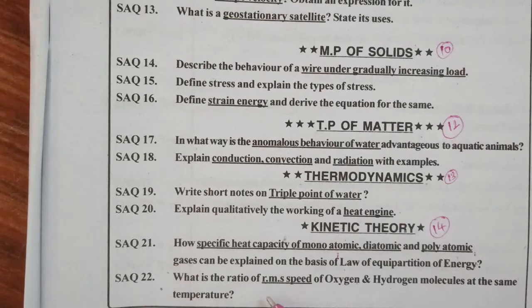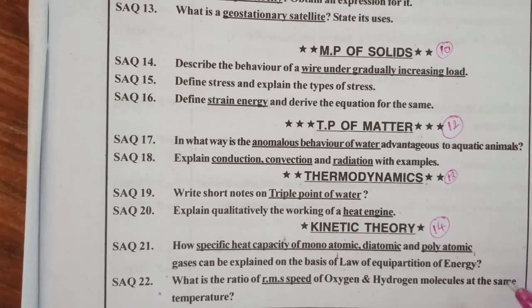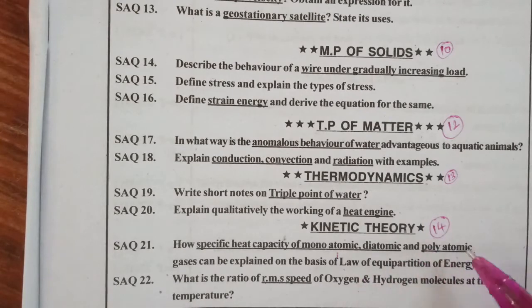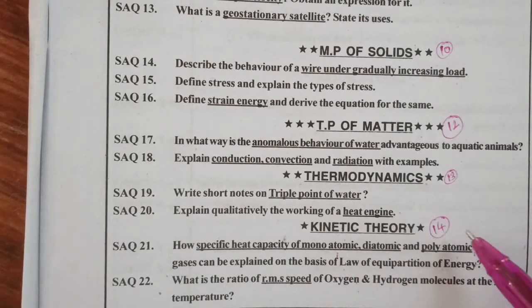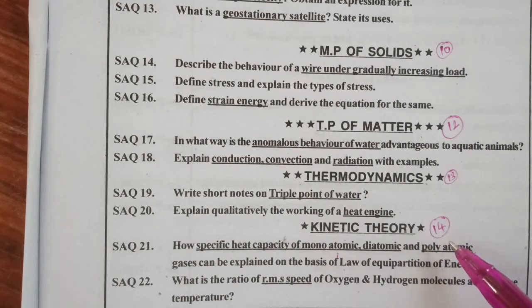What is the ratio of RMS speed of oxygen and hydrogen molecules at the same temperature? This is also very important. So just go through kinetic theory. Whatever is there in kinetic theory, don't leave anything. 2 marks or 4 marks, it is very important.